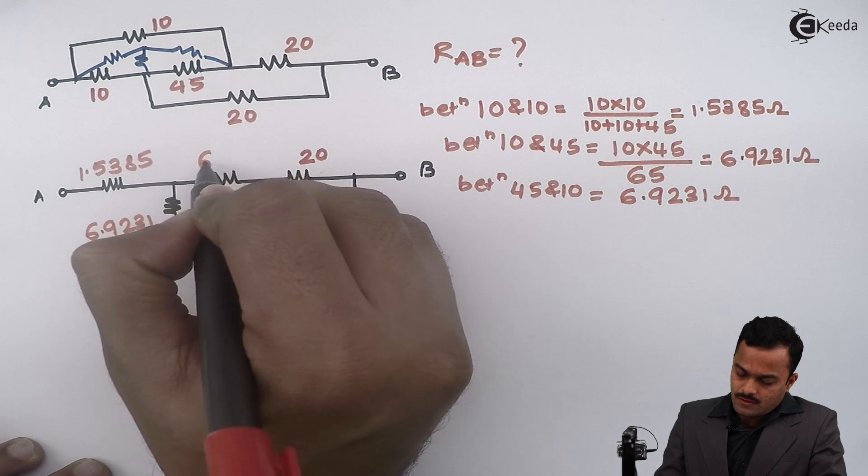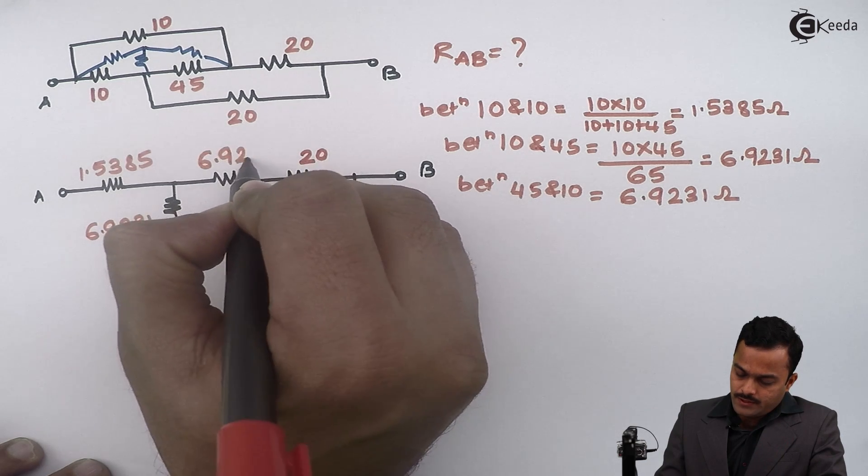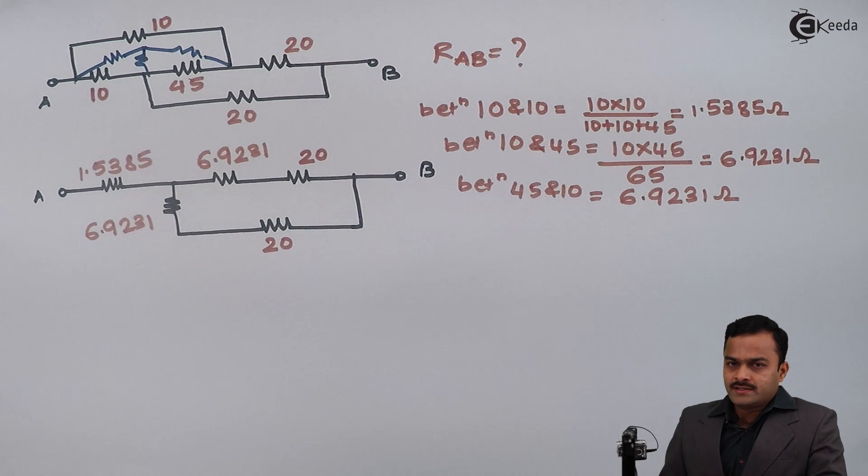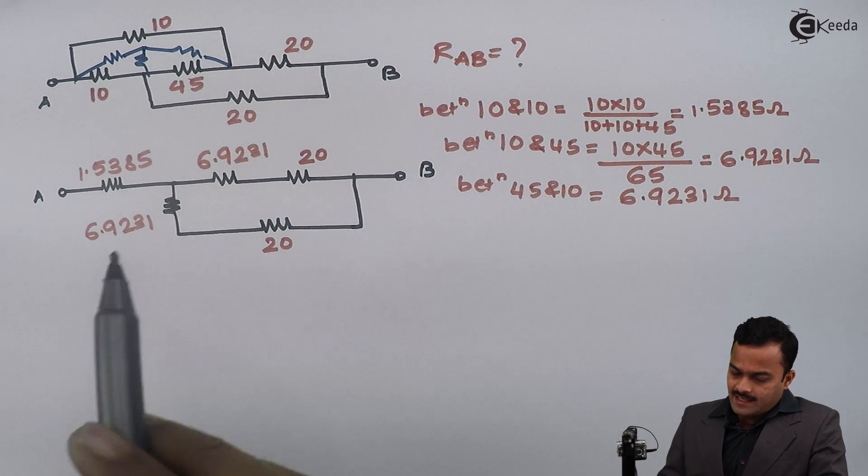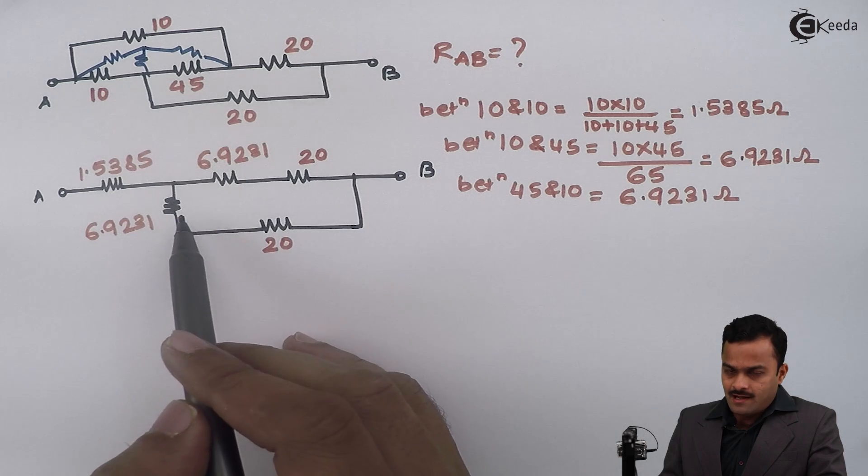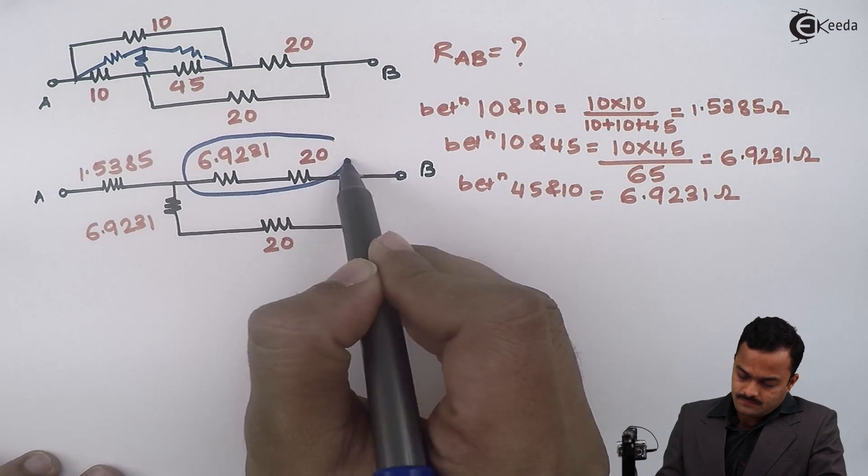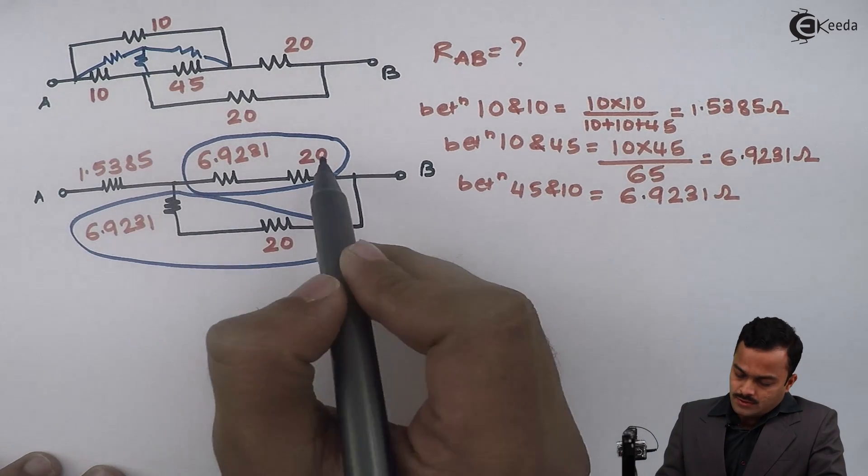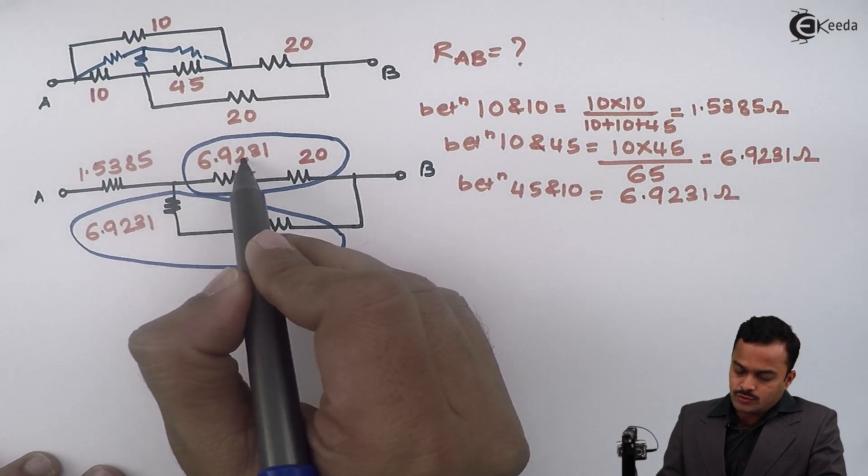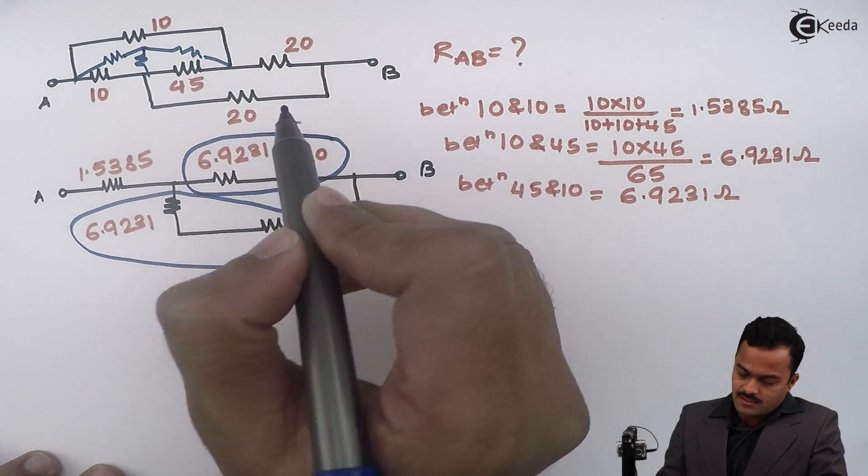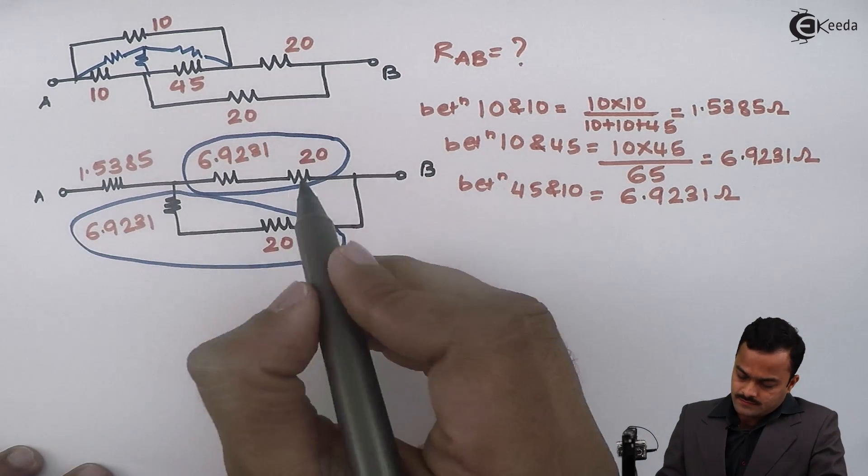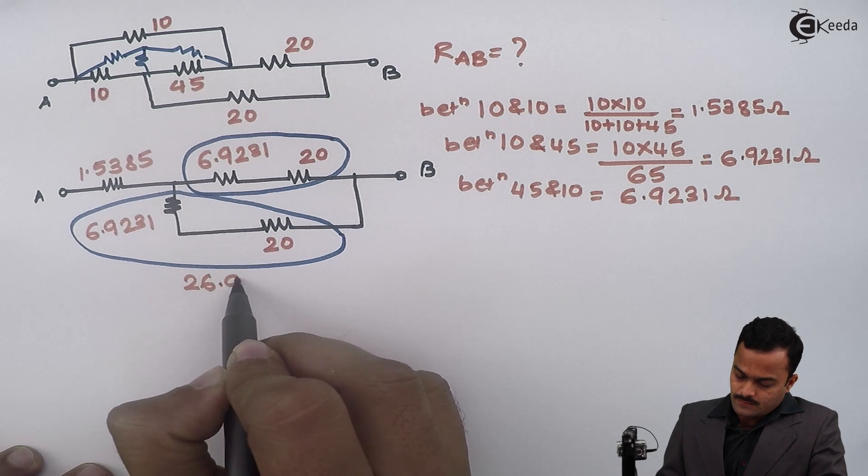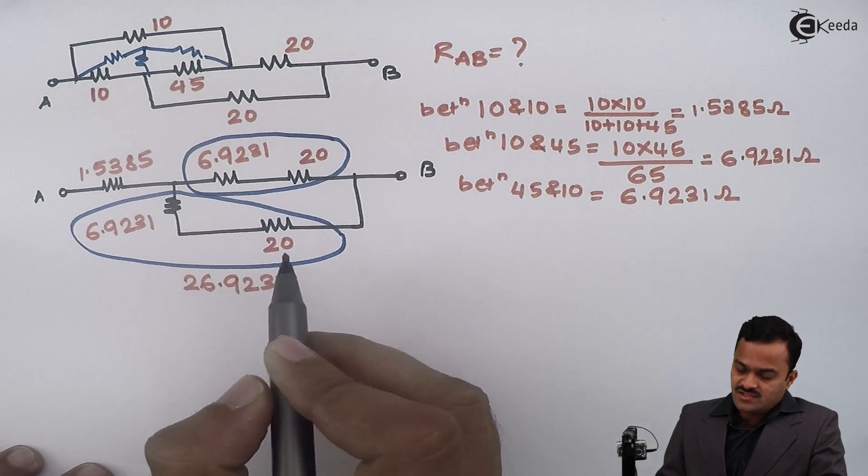So after doing this, see the change in the circuit. I'll get resistors now in series. 20 and 6.9231 will give me answer 26.9231. Same way over here, 26.9231.